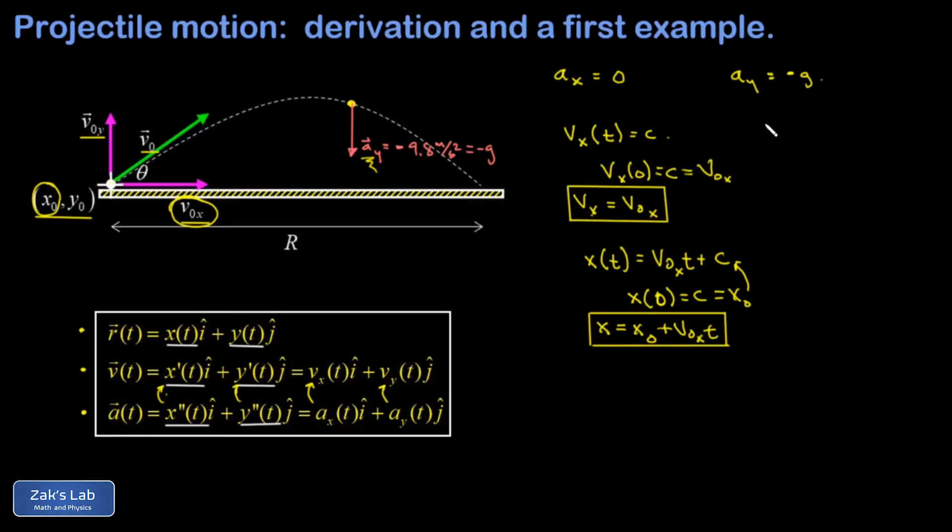Things are a little more complicated in the y direction. I find the antiderivative of the acceleration, which gives me a negative gt plus c. I evaluate that at t equals zero, which gives me a c. And vy of zero has a special name. That's v naught y, the initial y component of the velocity. This allows me to write down the y velocity as a function of time. That's v naught y minus gt.